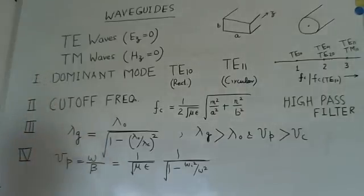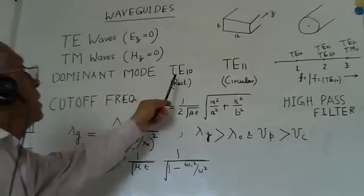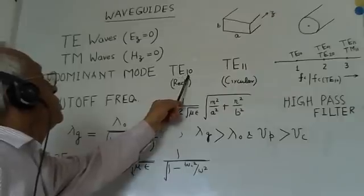And it also helps to eliminate other modes, or it can provide wider range of frequencies without other modes to interfere. So, for the dominant mode, the rectangular waveguide, the dominant mode is TE10.